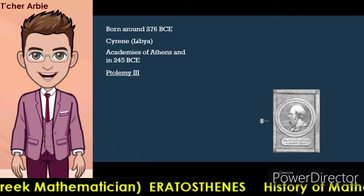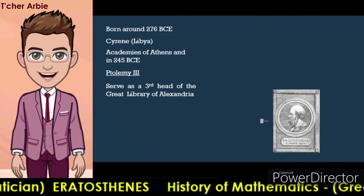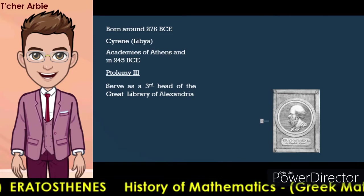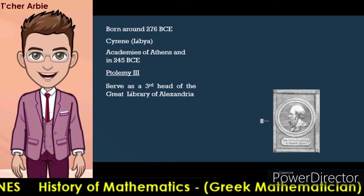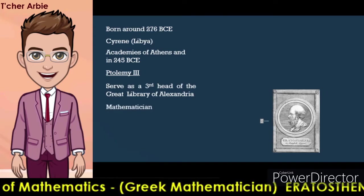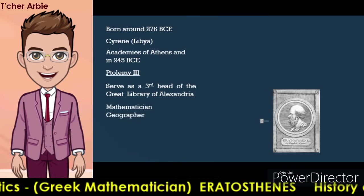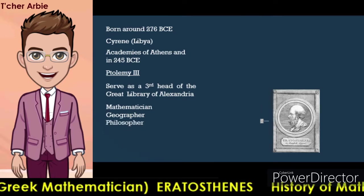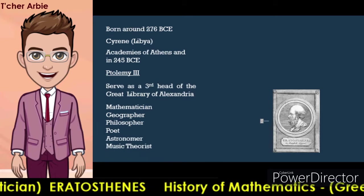He was invited to run the great library of Alexandria as the third head in Egypt. This was a major opportunity and Eratosthenes was excited to accept the position. In addition to being a mathematician and geographer, Eratosthenes was also a very gifted philosopher, poet, astronomer, and music theorist.